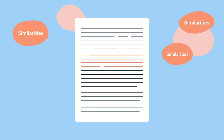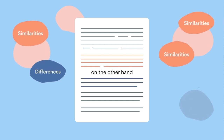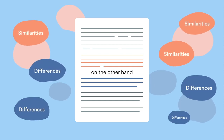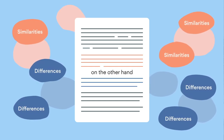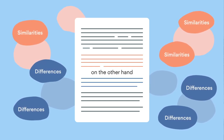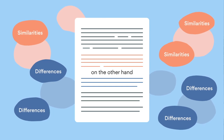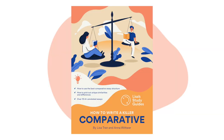Convergent ideas lead to similar conclusions and messages, while divergent ideas take us to different conclusions. If you'd like to learn more about this strategy, which can help you build more insightful discussions of the text by finding unique points of comparison, then I recommend you check out LSG's How to Write a Killer Comparative study guide. In the meantime, let's start with some convergent ideas.